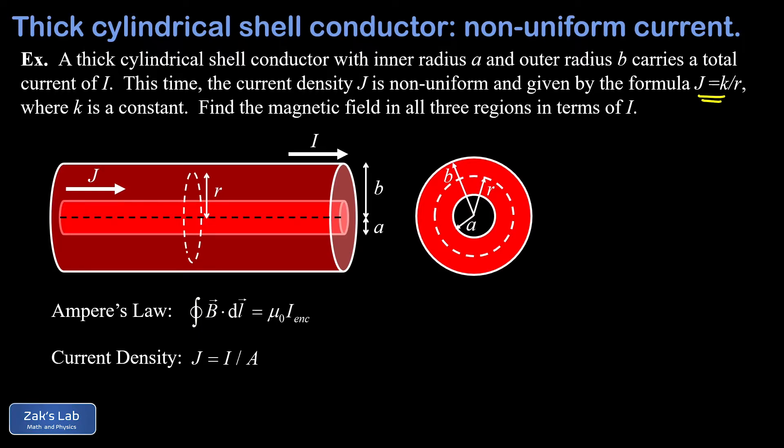We're asked to find the magnetic field magnitude in all three regions: inside the inner radius A, outside the outer radius B, and within the conductive material itself between A and B. Each of these magnetic fields needs to be expressed in terms of the total current I in the wire, rather than the constant k.